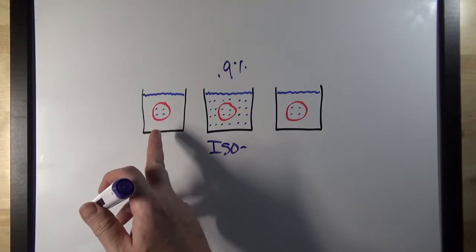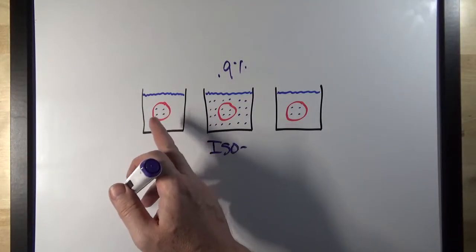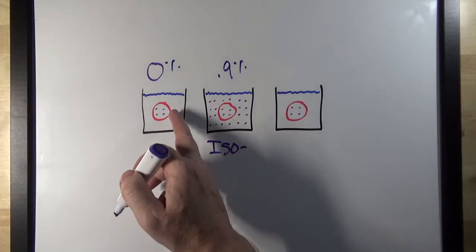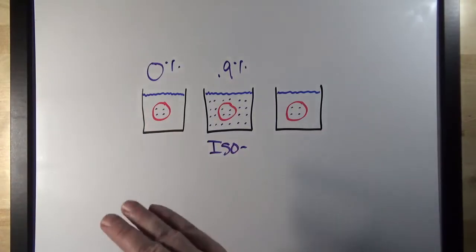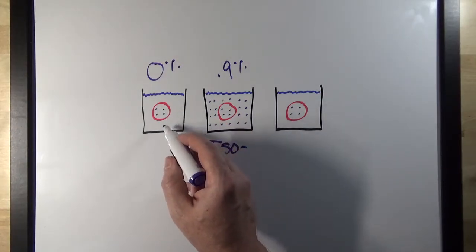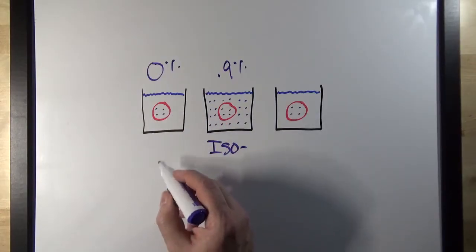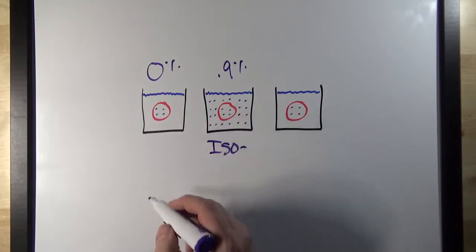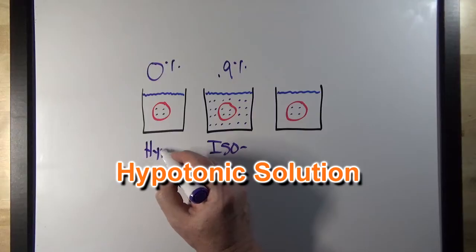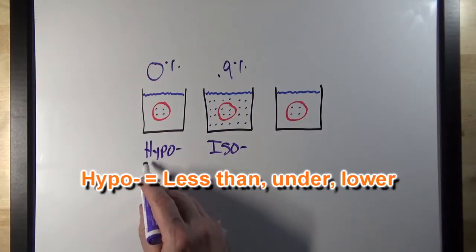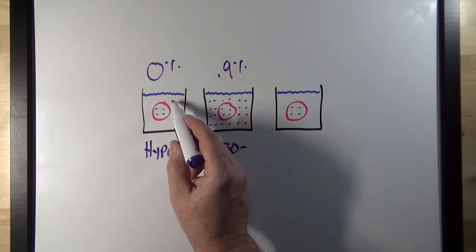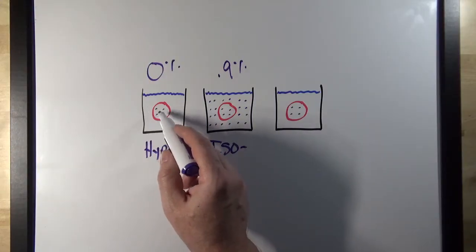In this example, we have a red blood cell in a 0% salt solution — this is distilled water, with no solute particles in the solution. Since the solute concentration on the outside of the cell is lower than what's in the red blood cell, we can say that this solution is a hypotonic solution. 'Hypo' means less than or underneath, so the solute concentration is less than what's inside the cell.